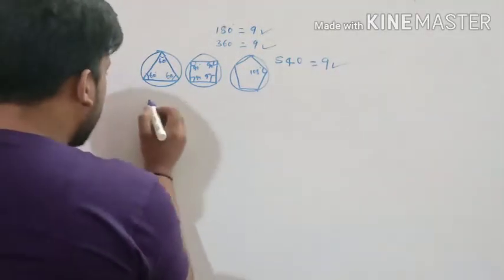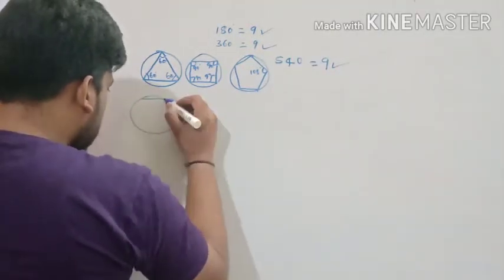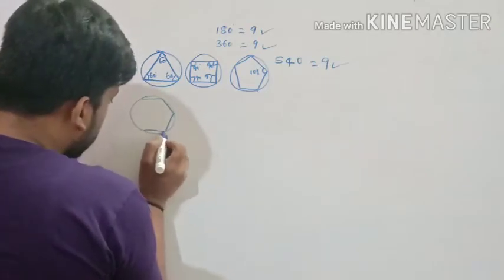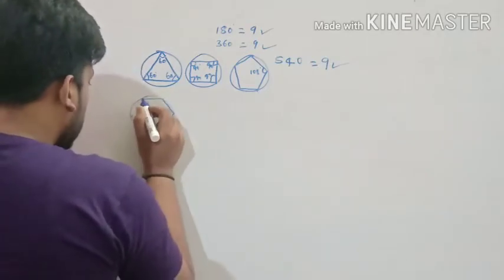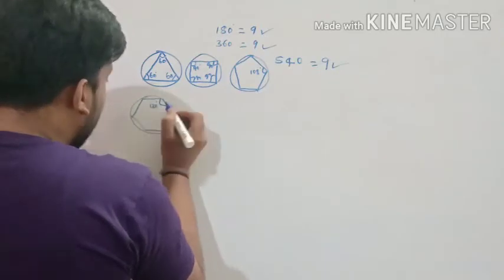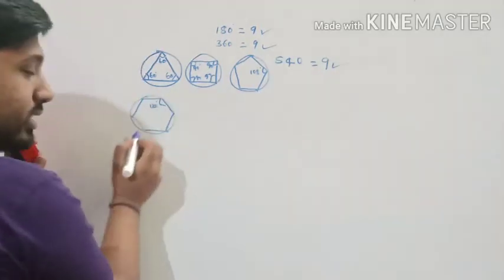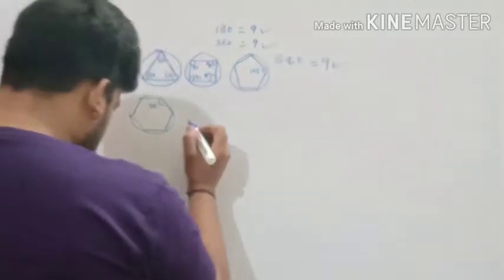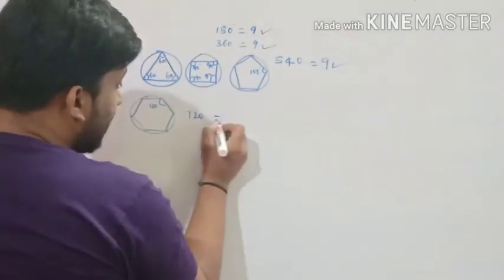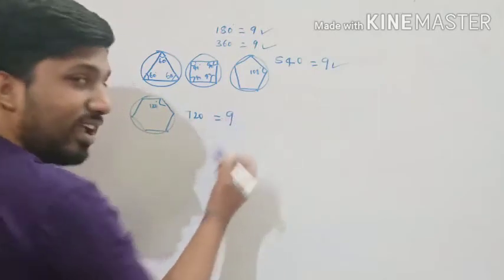Let me go to the hexagon. The internal angle sum of a hexagon is 120 degrees per angle, and there are 6 angles, so 120×6 = 720. And 7+2+0 = 9 again. How beautiful is this!